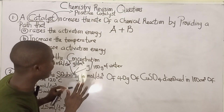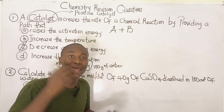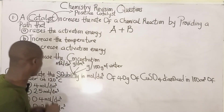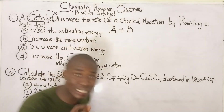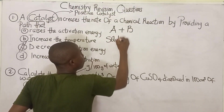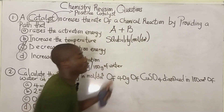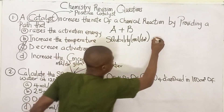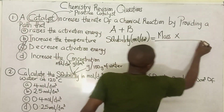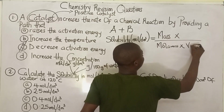There are various ways to express solubility, each with its own formula. The question asks us to calculate solubility in moles per dm³. The formula to use is: solubility = (mass × 1000) / (molar mass × volume). I'll write it down so we can solve the question together.